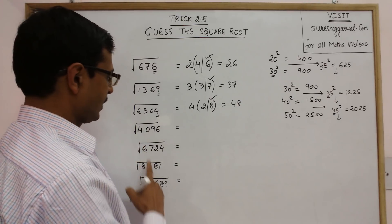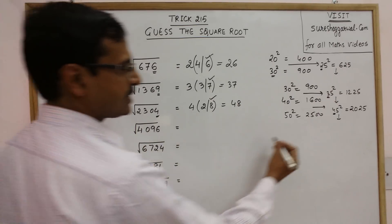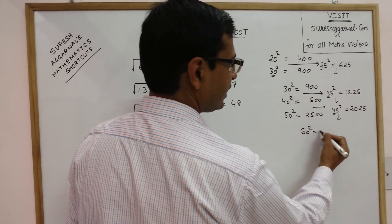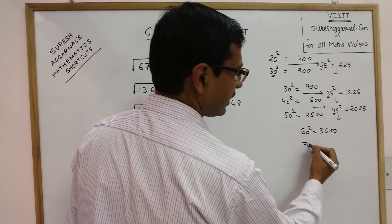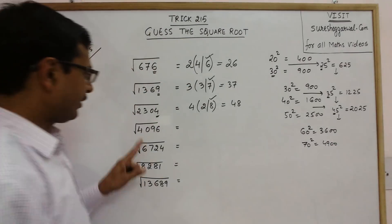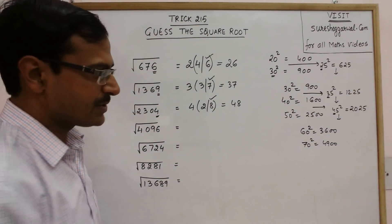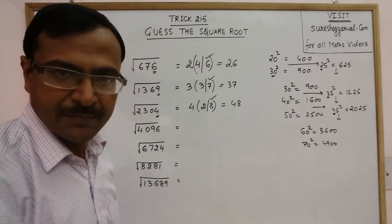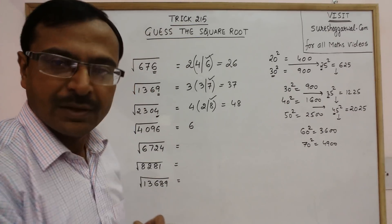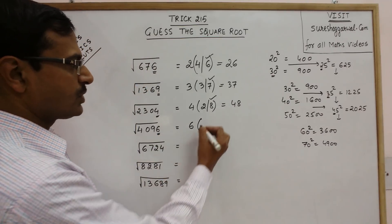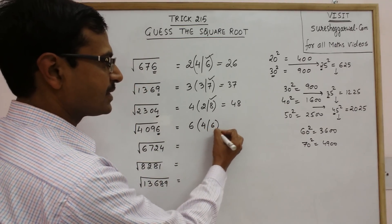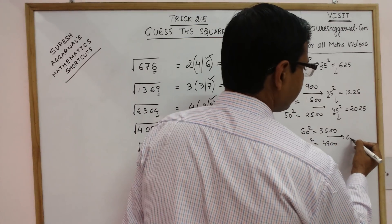See 4096. Here you have 60 square is 3600 and 70 square is 4900. Our number lies between these two. So answer will be between 60 to 70. So 6 will be the first place. And the second place, here you have 6, so either it will be 4 or 6. Now check the intermediate number 65.